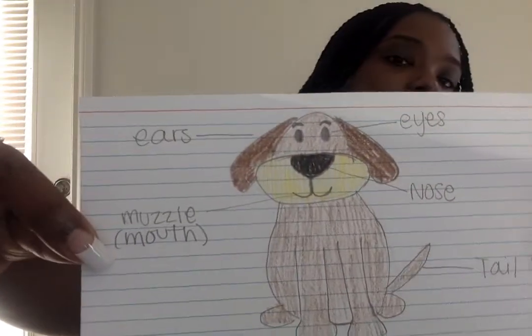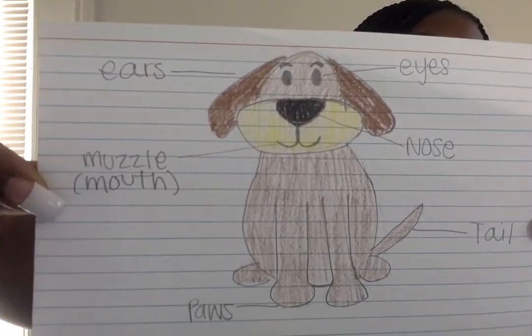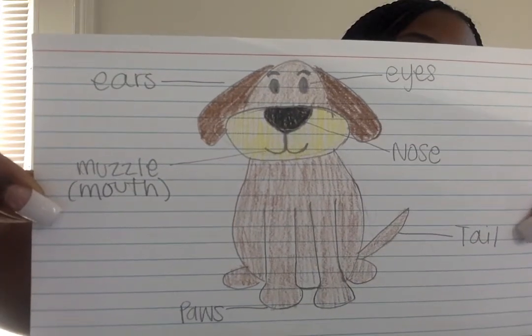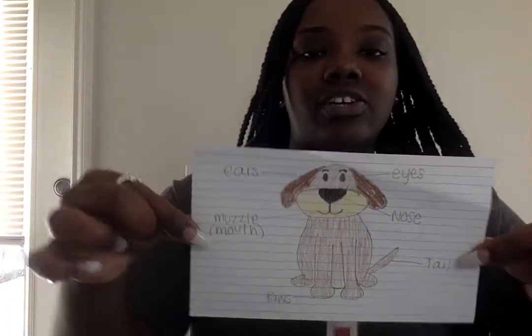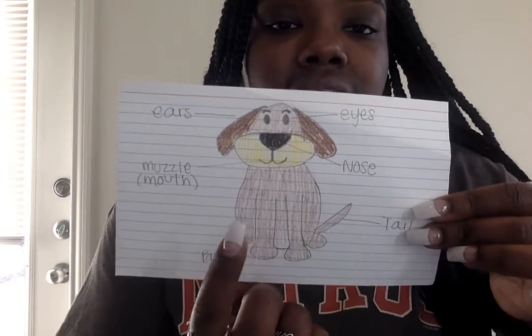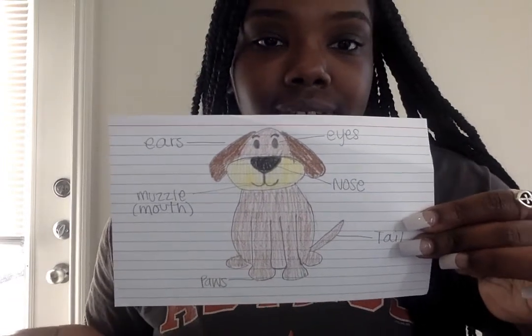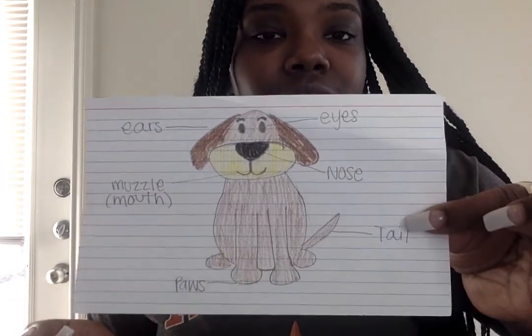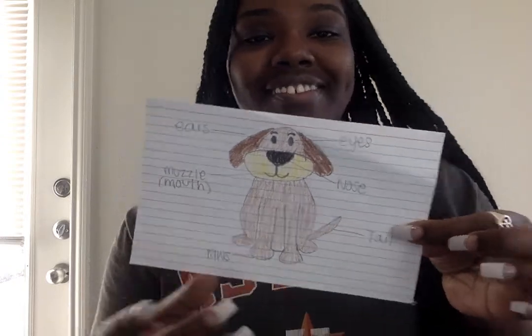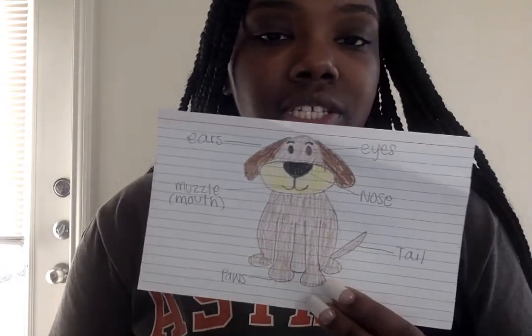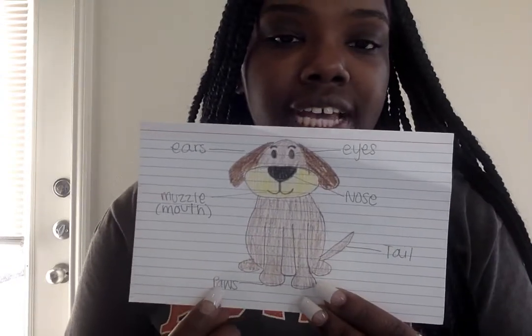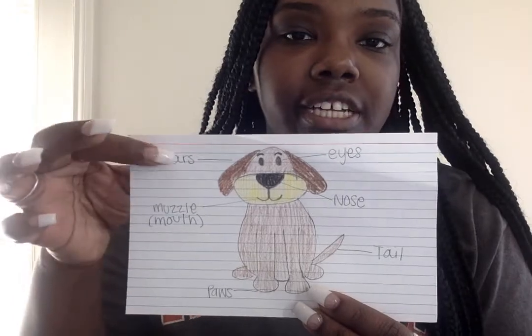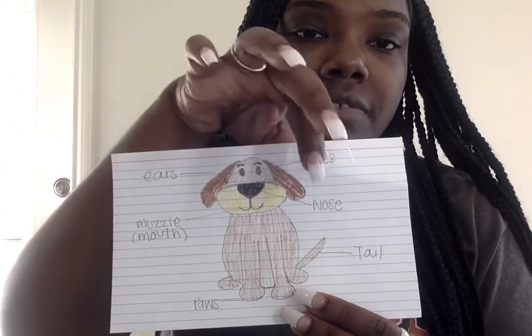So here's an example of what I did. Can anybody guess what this is? That's correct — it is a dog. Did I do a good job of drawing it? So you see how I labeled the different parts of the dog?